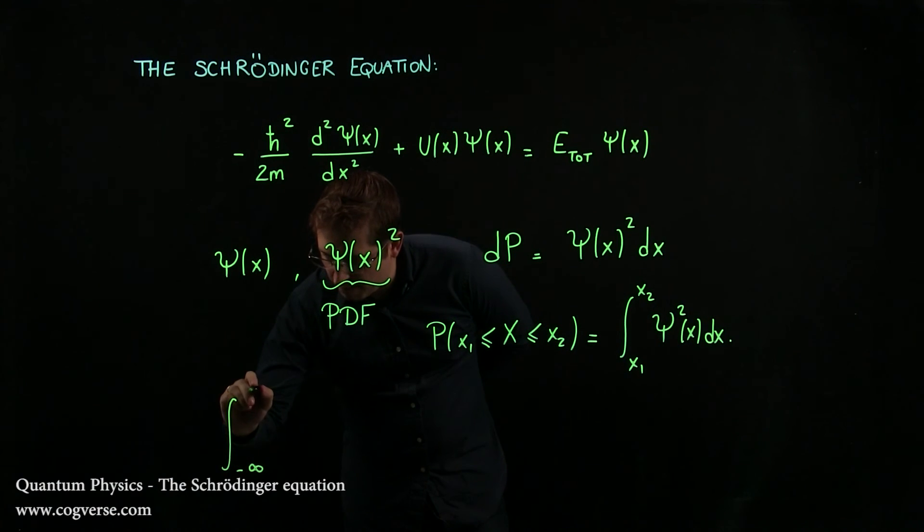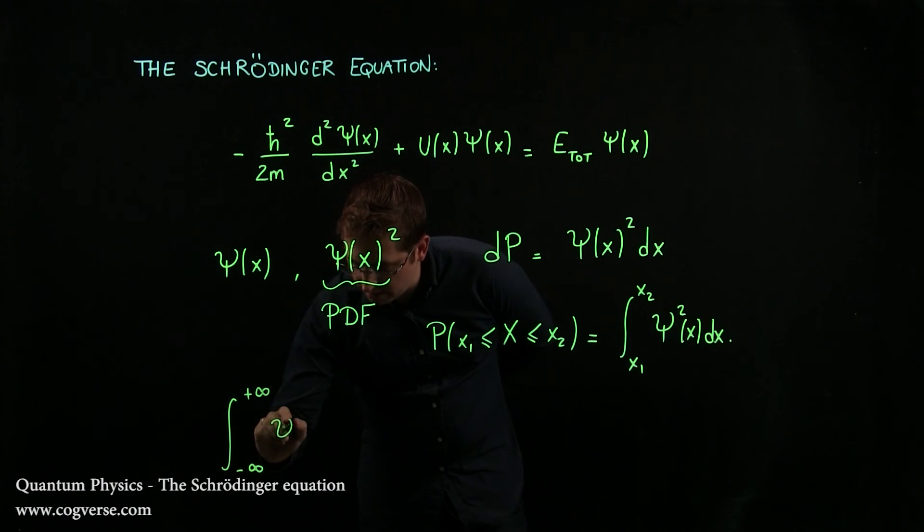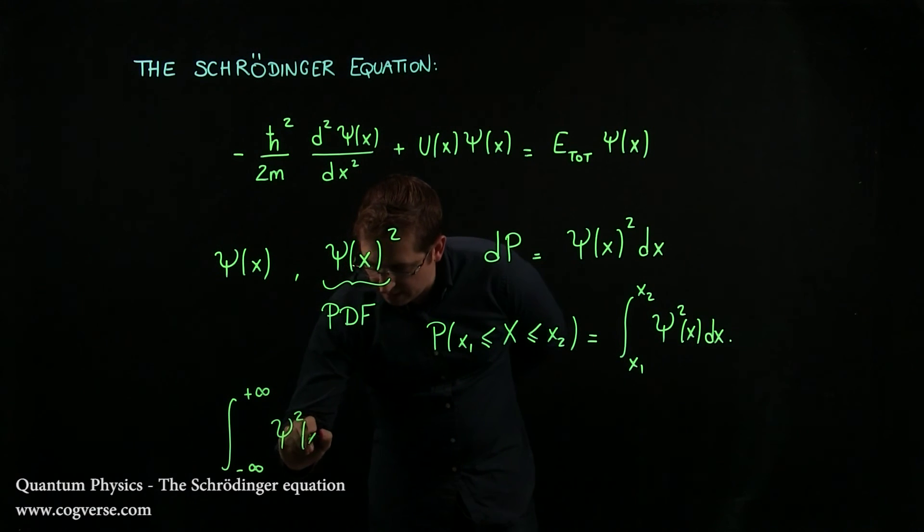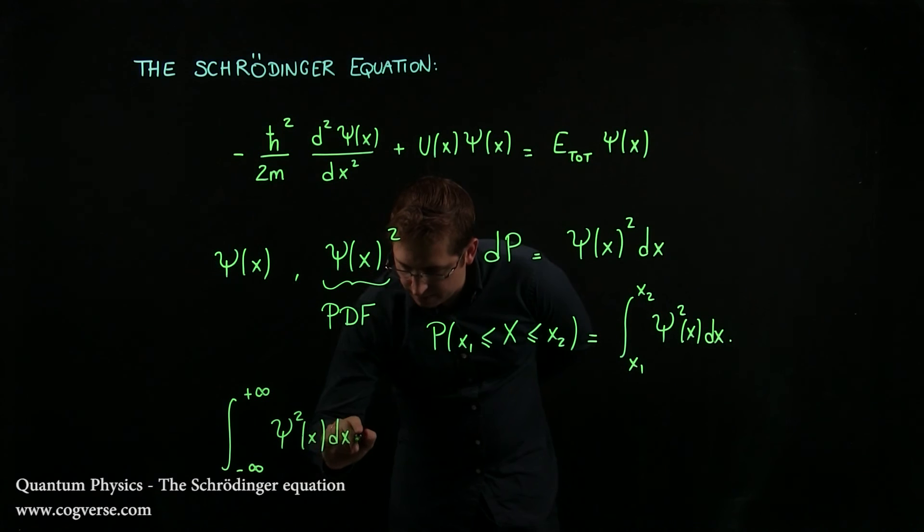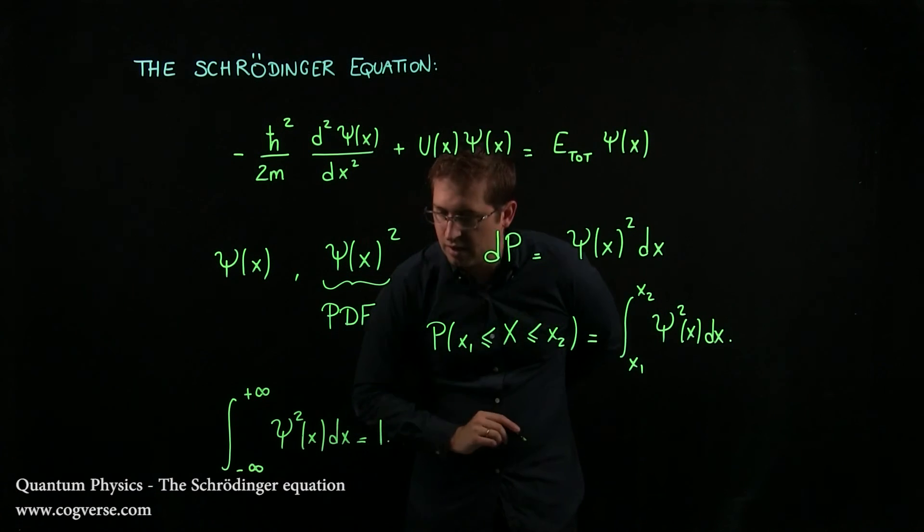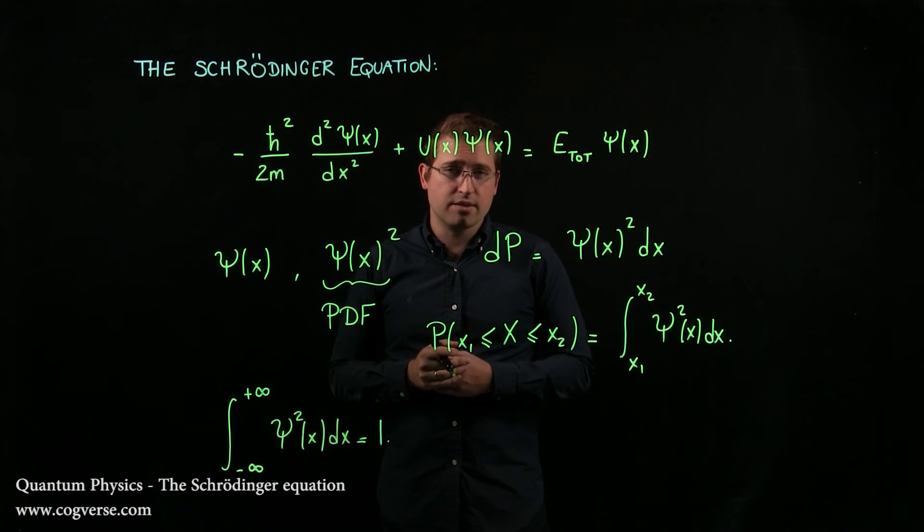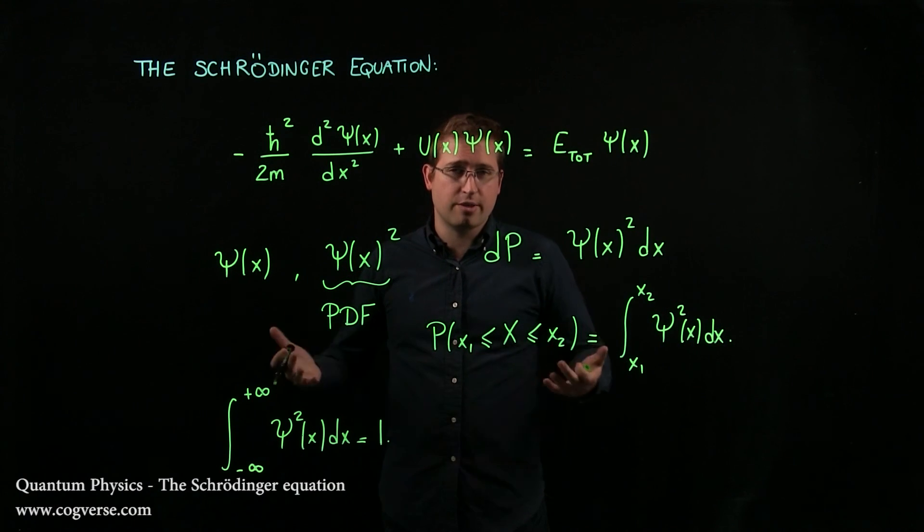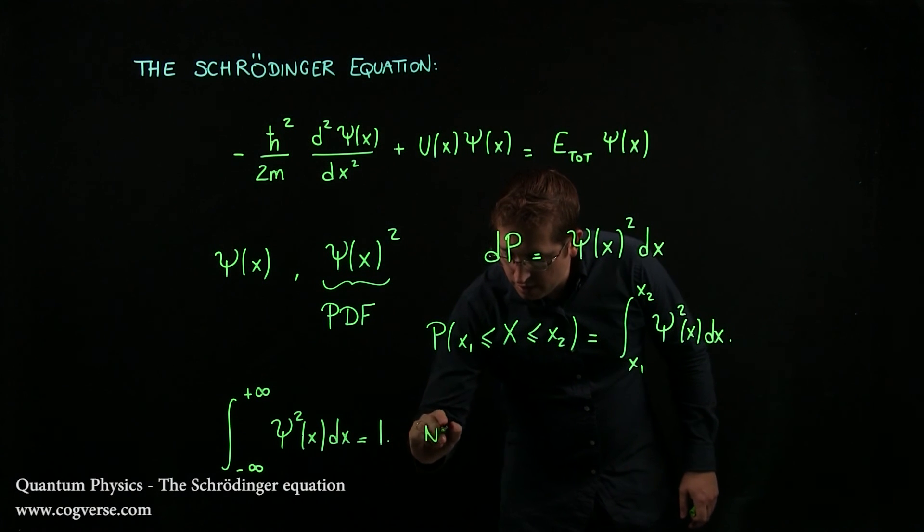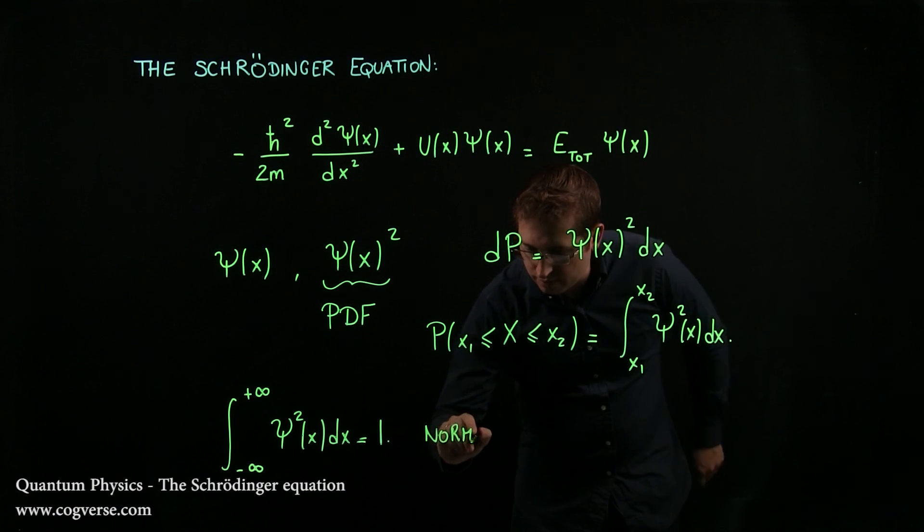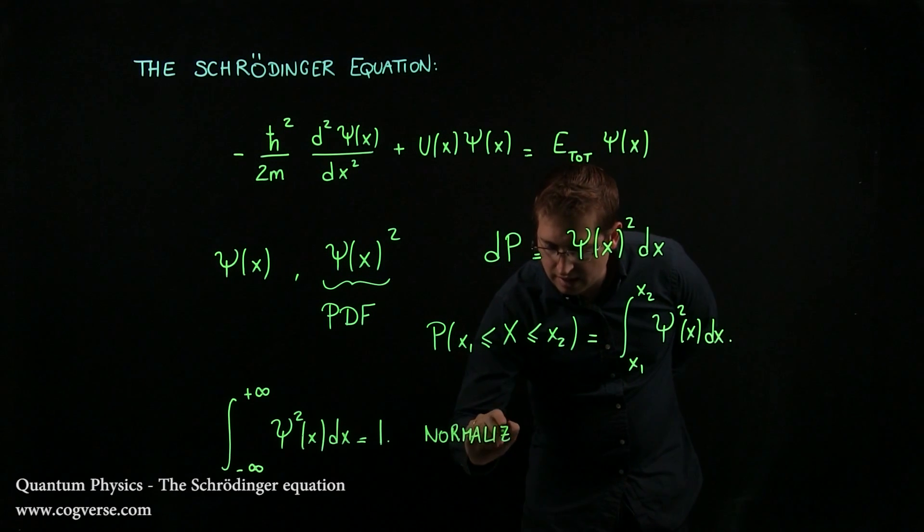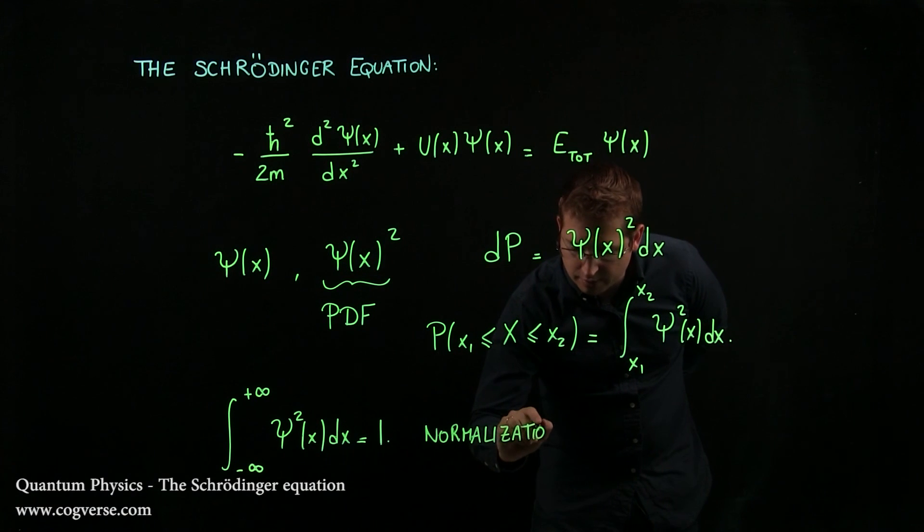The integral from minus infinity to plus infinity of ψ²(x) dx has to be 1. Because the probability of finding the particle somewhere on the x-axis is equal to 1. We're sure that the particle is somewhere. Now this is called the normalization condition. And we'll see how to use it in the following example.